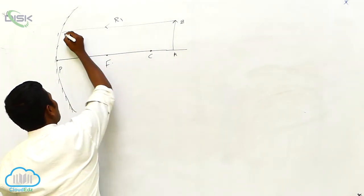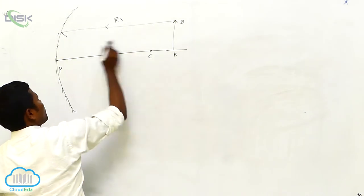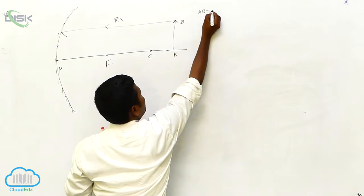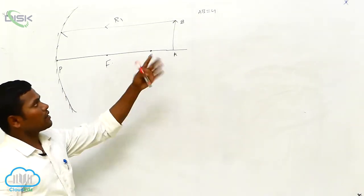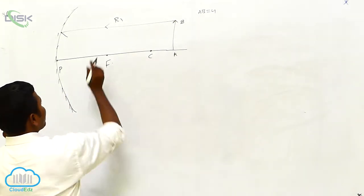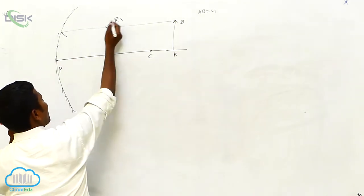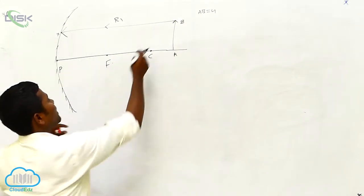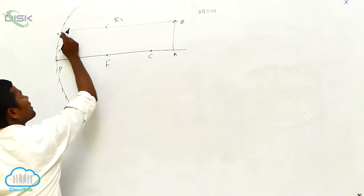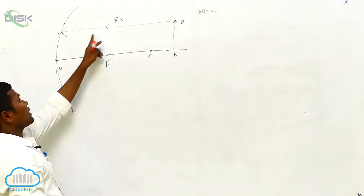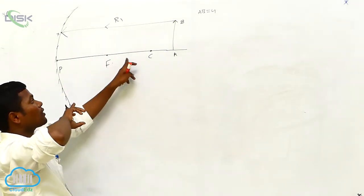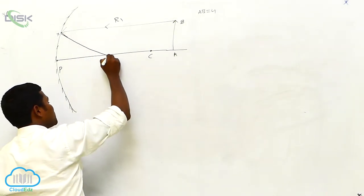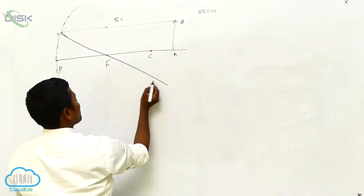R1 ray passing through the focus. I consider from the object AB — that is the u direction. R1 is striking on the mirror at a certain point X. This R1, as already said, is parallel to the principal axis and will definitely pass through the focus.